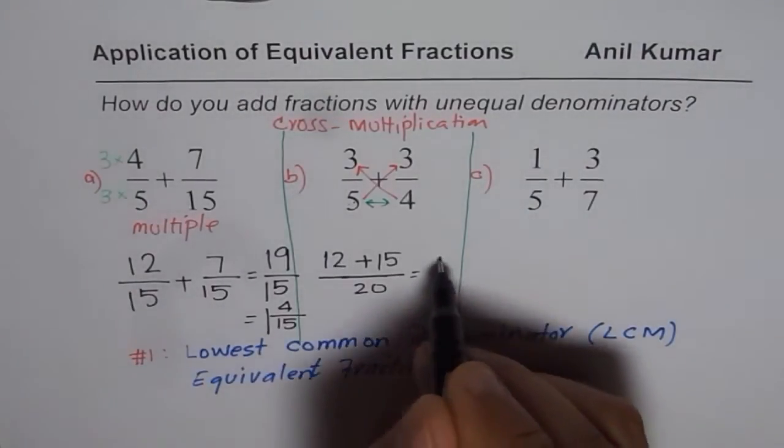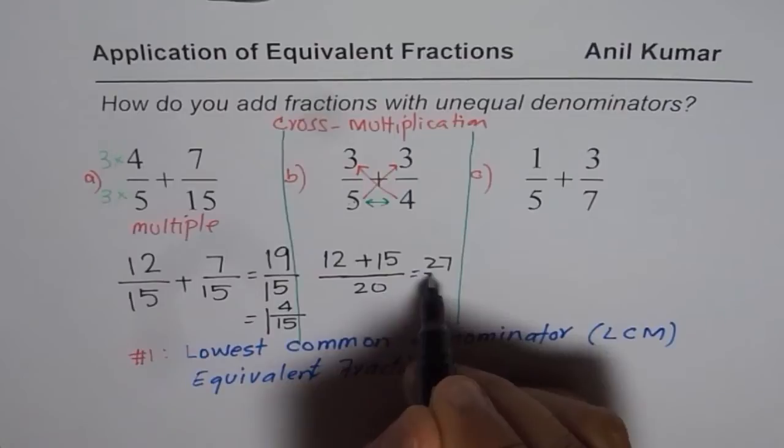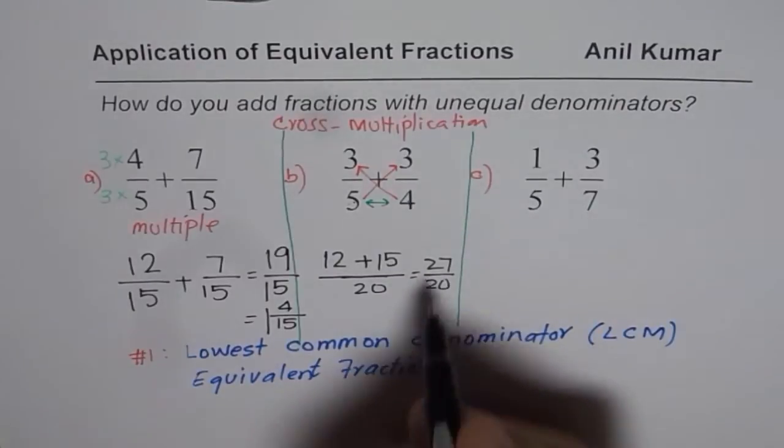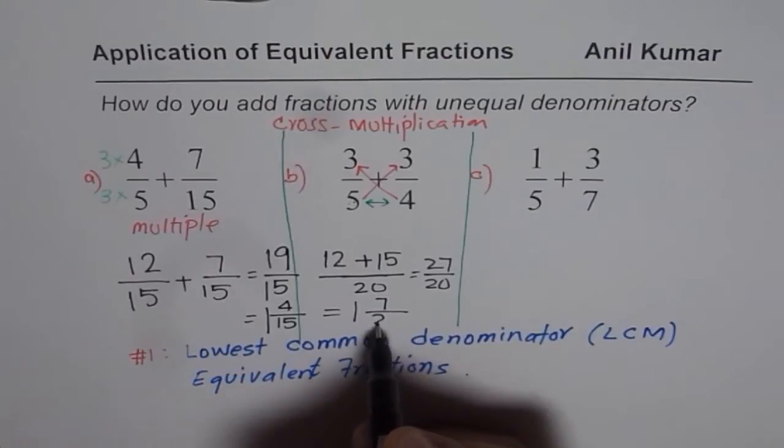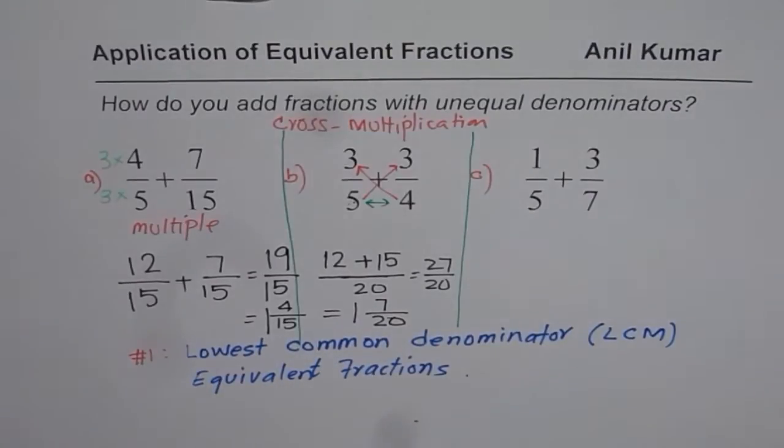So we have 27. Five plus two is seven. One plus one is two. So 27 over 20, you write this as one whole seven over 20. So that is how you can do it.